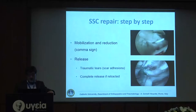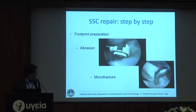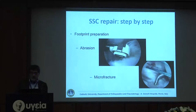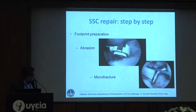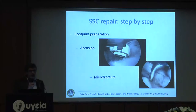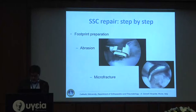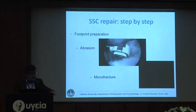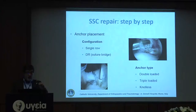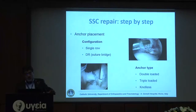Then you prepare the footprint by abrasion using a standard arthroscopic burr or by microfractures. I actually use a smaller arthroscopic device for nanofractures, which goes very deep into the bone to achieve bone marrow access from the deep cancellous bone. You can then place your anchors using a single-row technique or double-row — suture bridge, double- or triple-loaded — depending on your confidence with the technique and device.